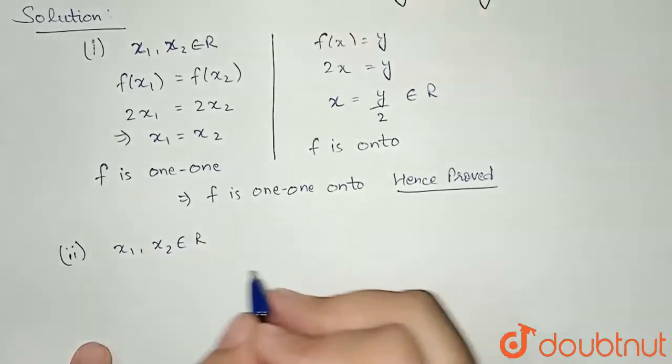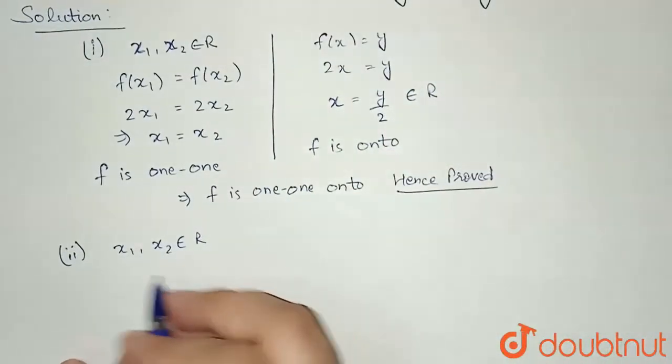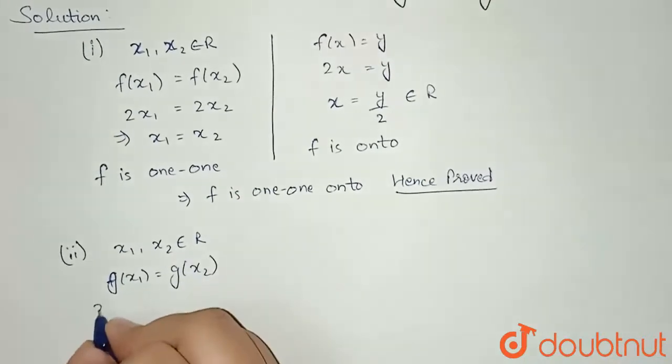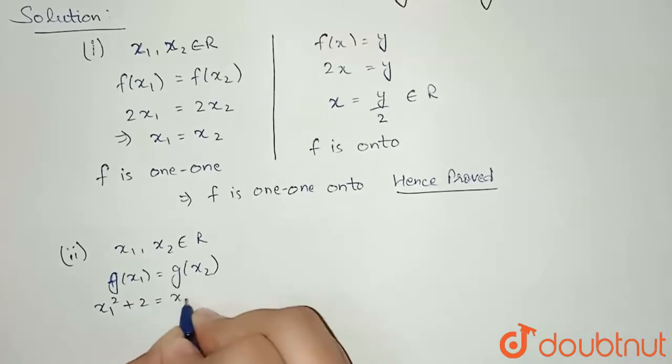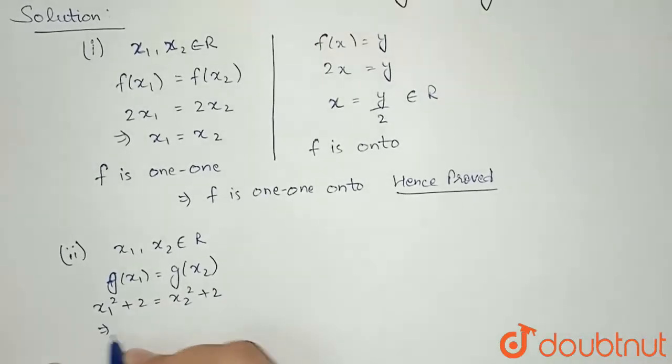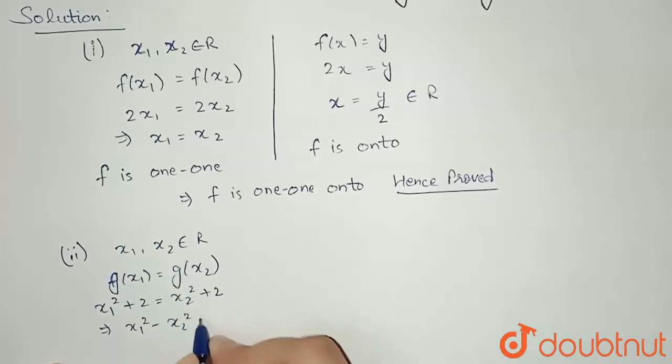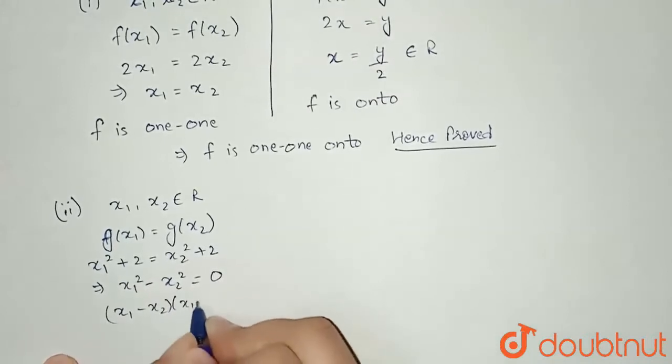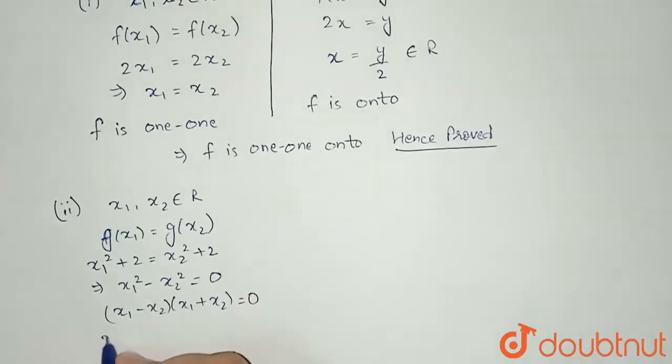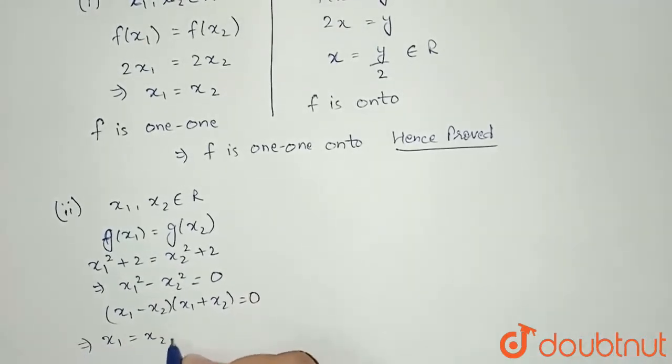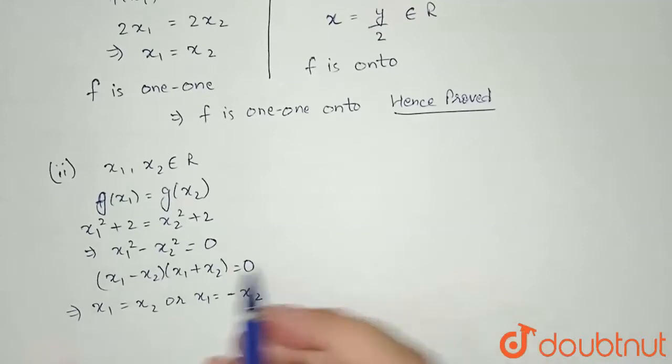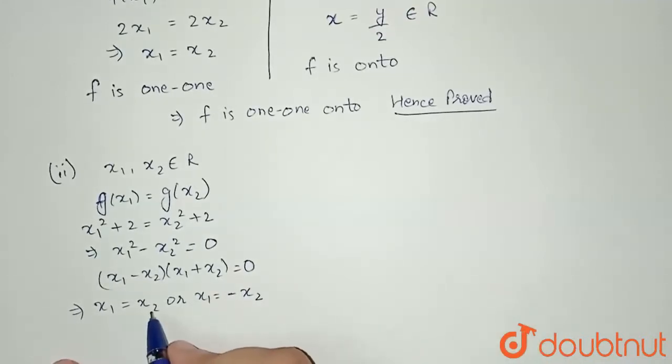Now the function definition of g(x) is x² + 2, so I can write g(x₁) = g(x₂), and I can substitute x₁² + 2 = x₂² + 2. If I rearrange I will get x₁² - x₂² = 0. Again if we factorize, I will get (x₁ - x₂)(x₁ + x₂) = 0, so I will get either x₁ = x₂ or x₁ = -x₂. Since we are getting two results, the function will not be one-one, so I can write my function g is many-one.